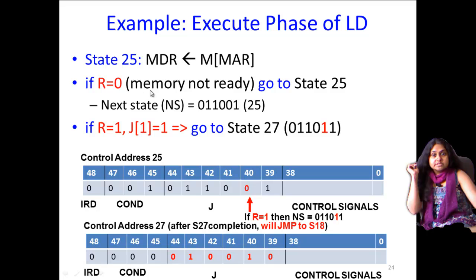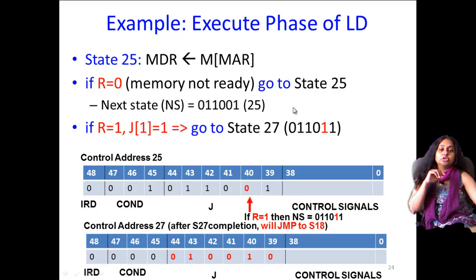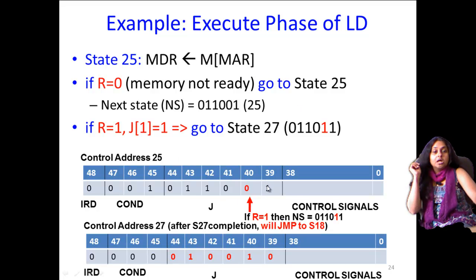So if r is equal to 0 or memory is not ready, then you go to state 25, otherwise you go to state 27. Now you see that for the micro instruction where you are in state 25, you have two possibilities. The next state could either be state 25 or it could be state 27. So in this case, you encode this fact that there could be two possible states as con bits 0, 0, 1.